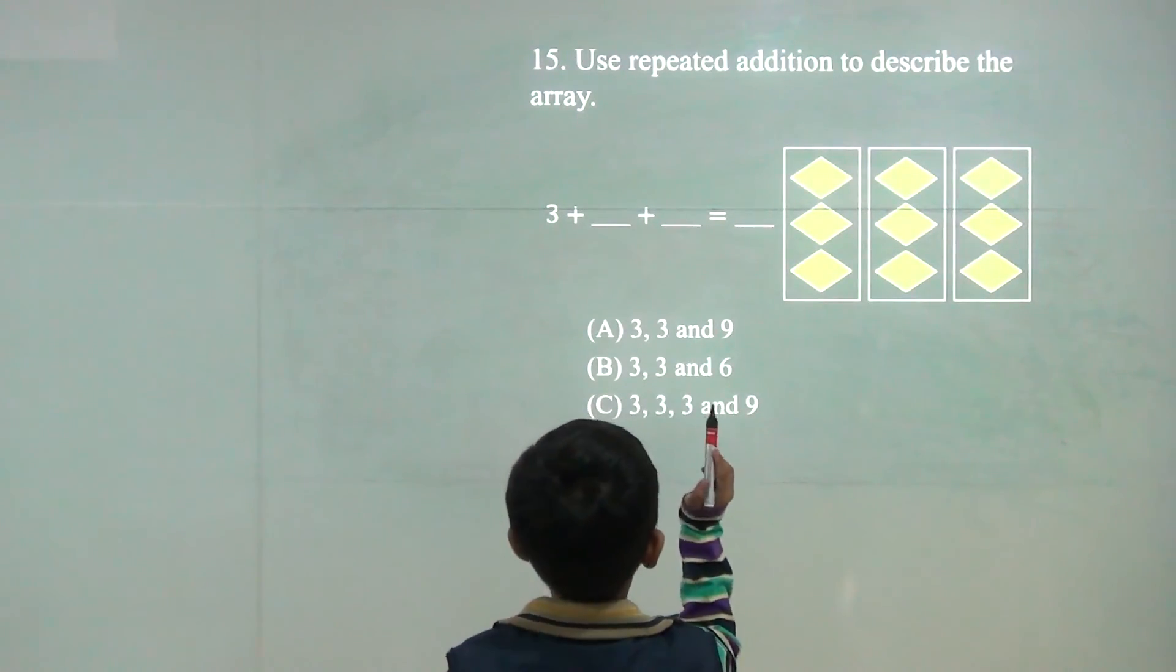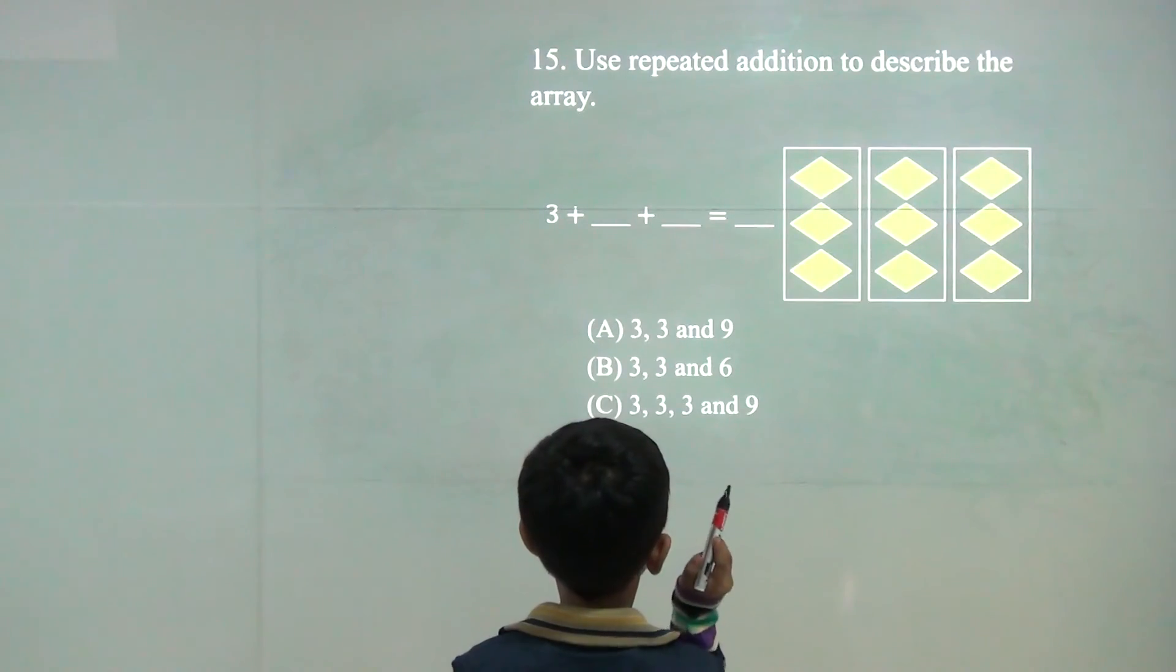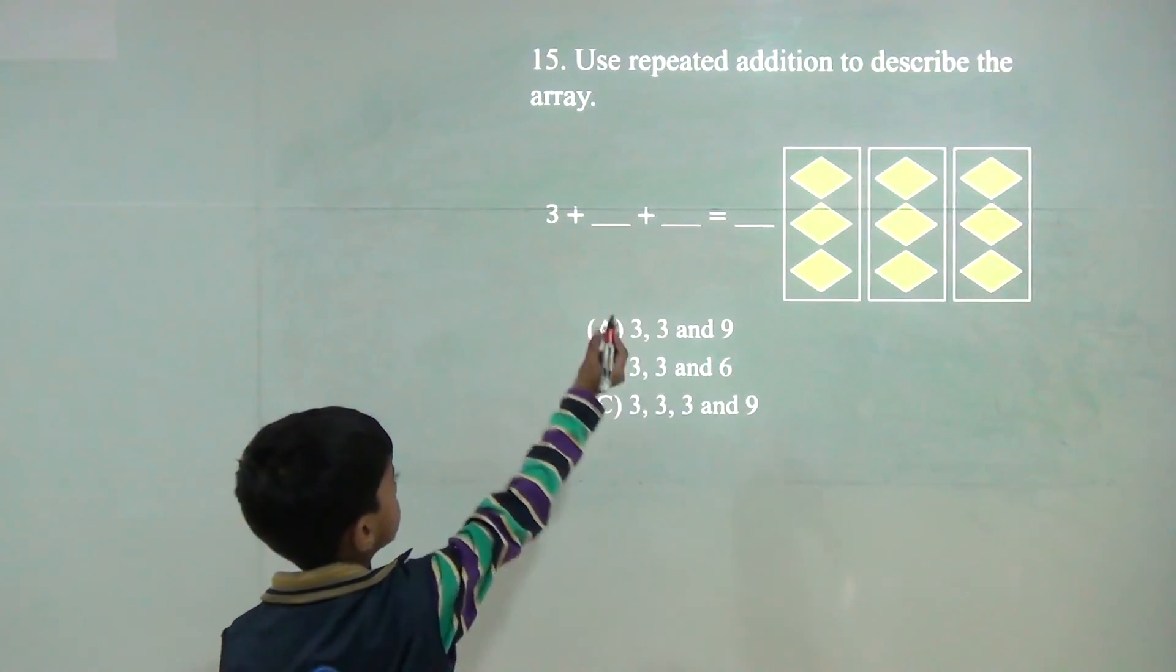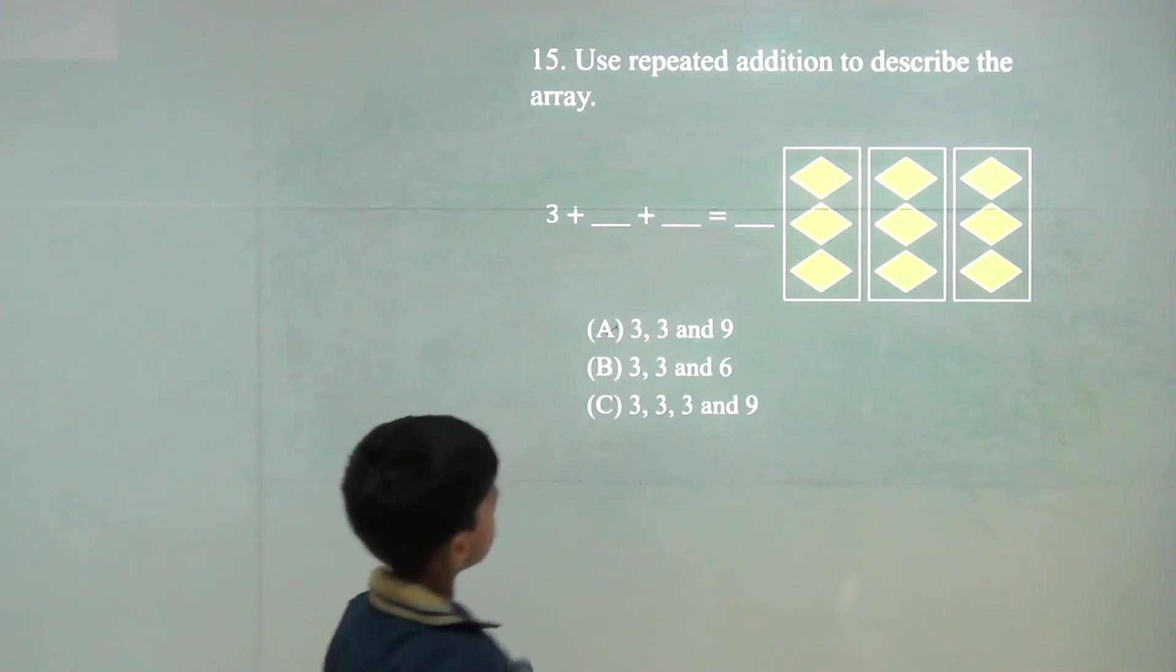3 and 3 is 6 plus 3 is 9. So answer would be A.